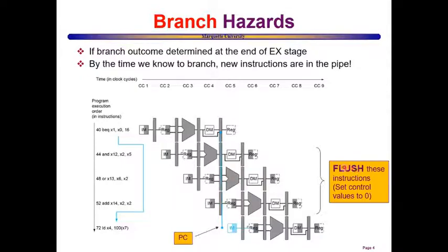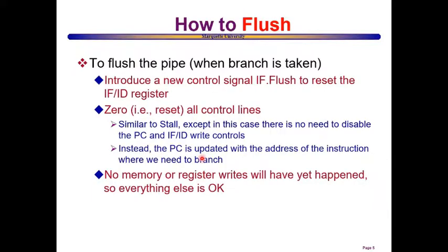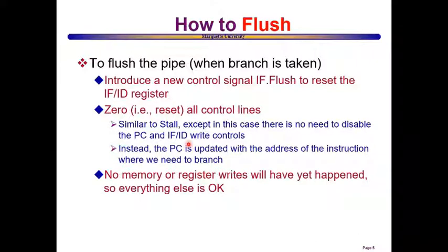We have to flush — essentially discarding everything done for those instructions. Flushing is implemented by introducing a new control signal to reset the IF/ID register and zeroing all control lines. Unlike stalling, there is no need to disable the program counter or hold the IF/ID register to re-decode the same instruction. Instead, we only need to update the program counter with the address of the instruction we actually need to branch to.